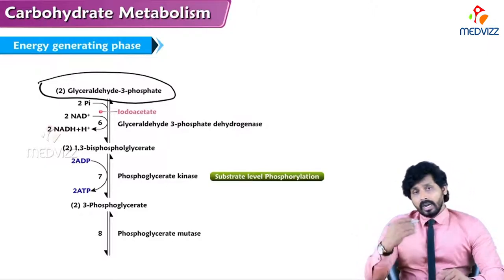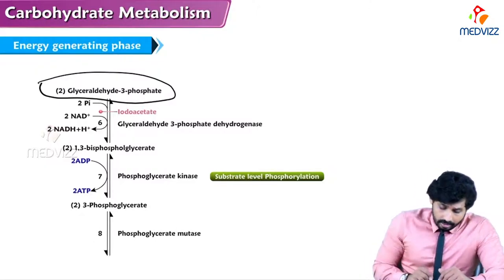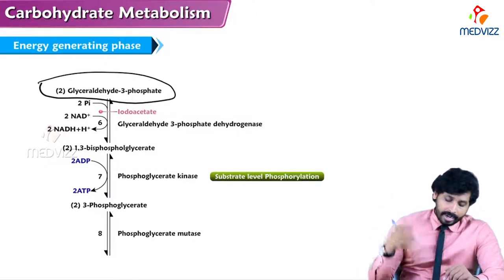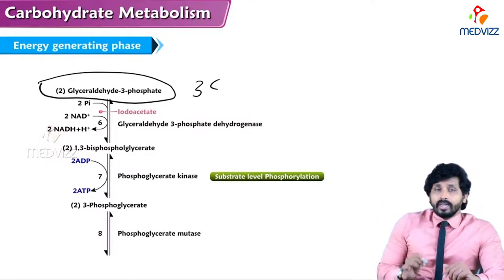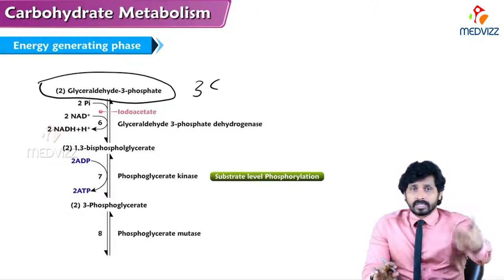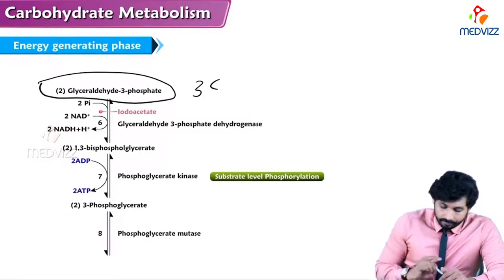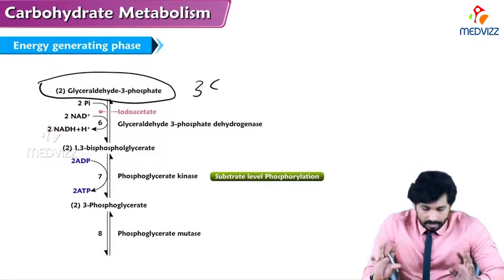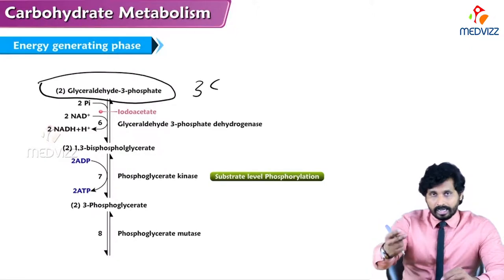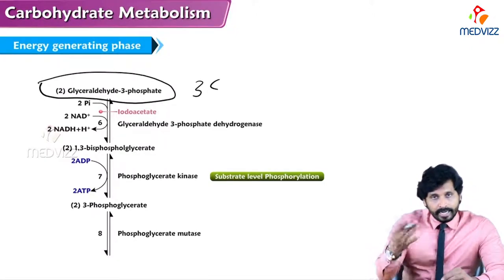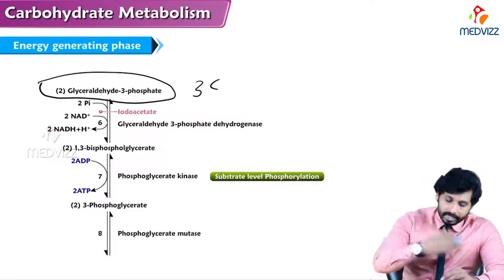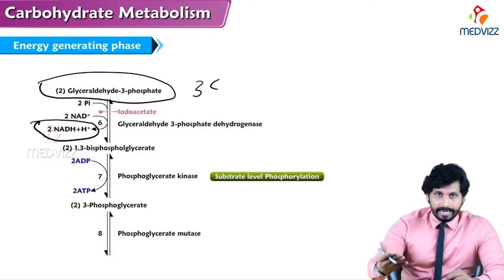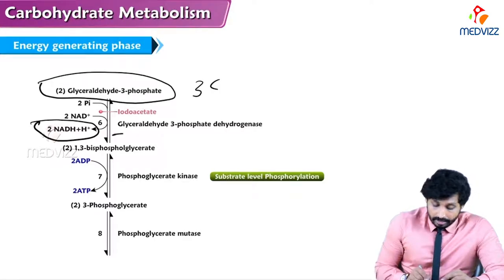The second phase of glycolysis now begins. Glyceraldehyde-3-phosphate is converted to 1,3-bisphosphoglycerate — a second phosphate is added at carbon one, donated by inorganic phosphate. Two reducing equivalents are produced: two NAD molecules accept hydrogen from glyceraldehyde-3-phosphate, converting to NADH + H⁺. So far we've invested two ATPs and are now gaining two NADH via glyceraldehyde-3-phosphate dehydrogenase.